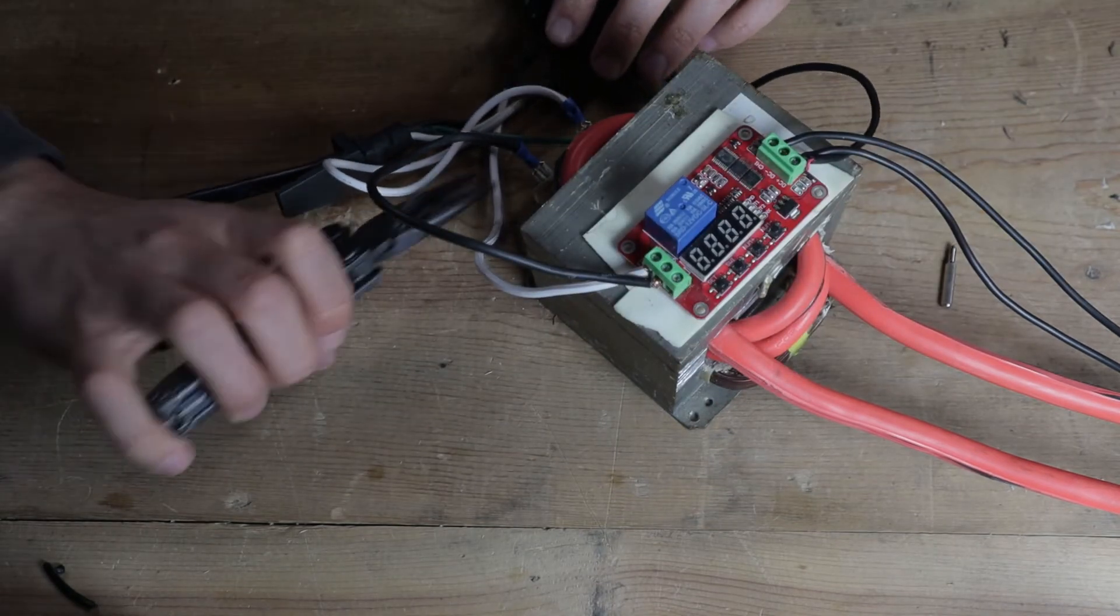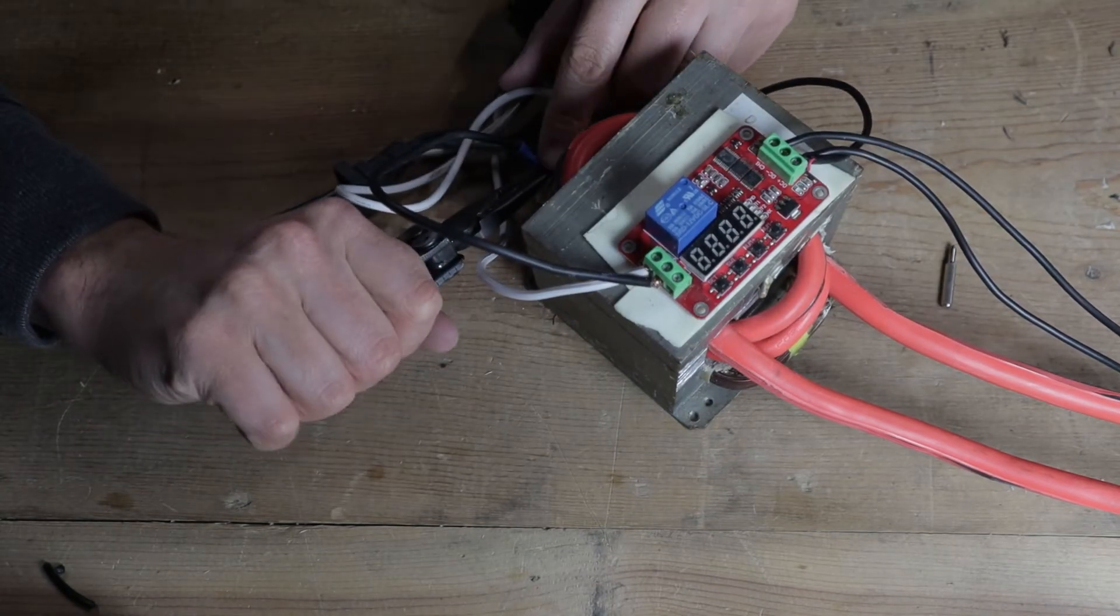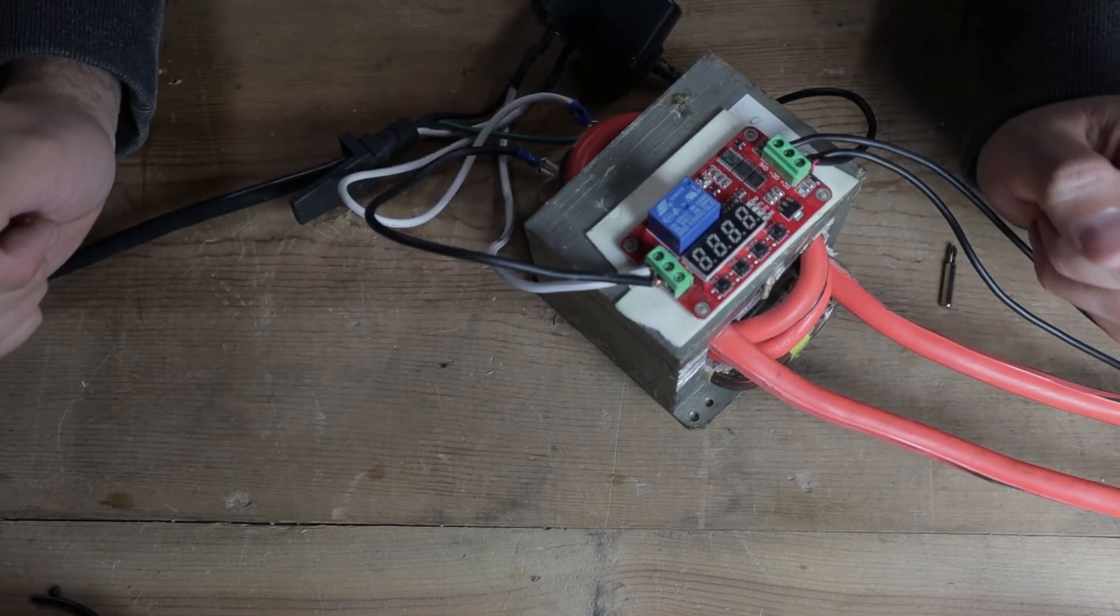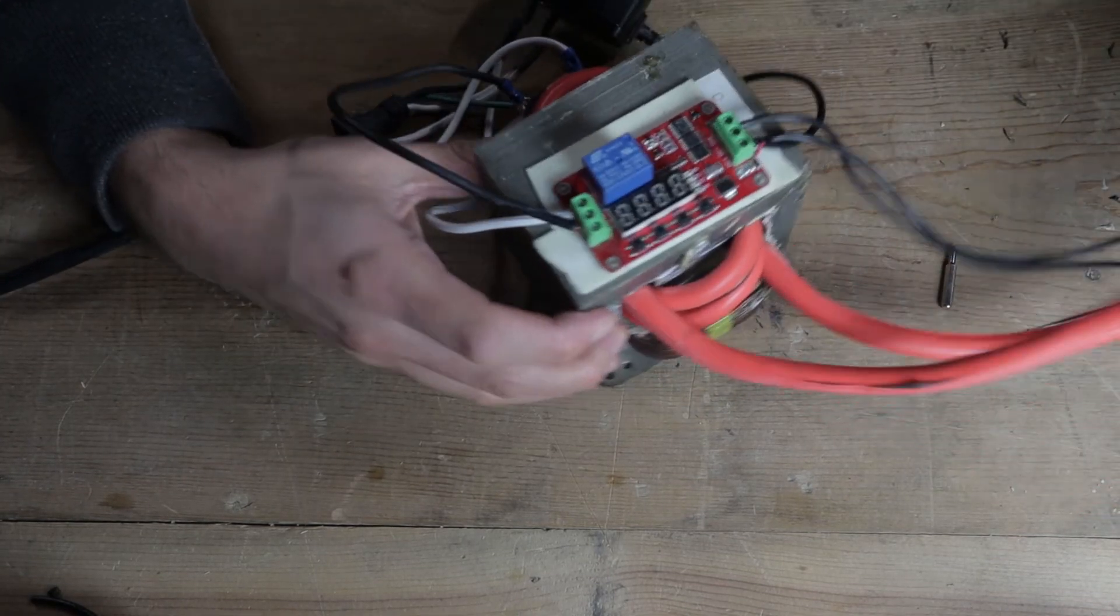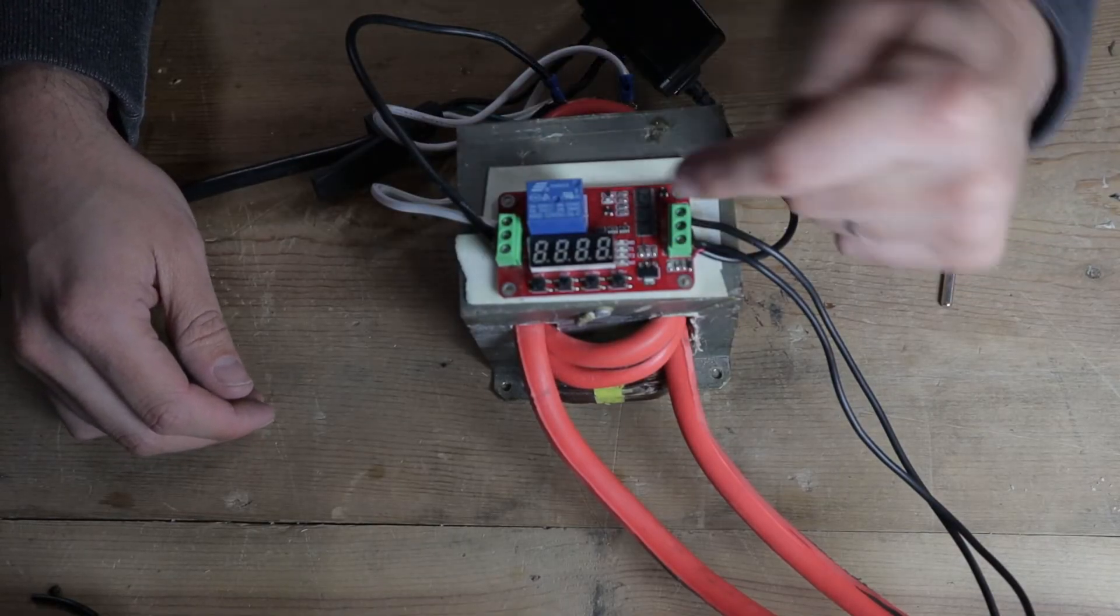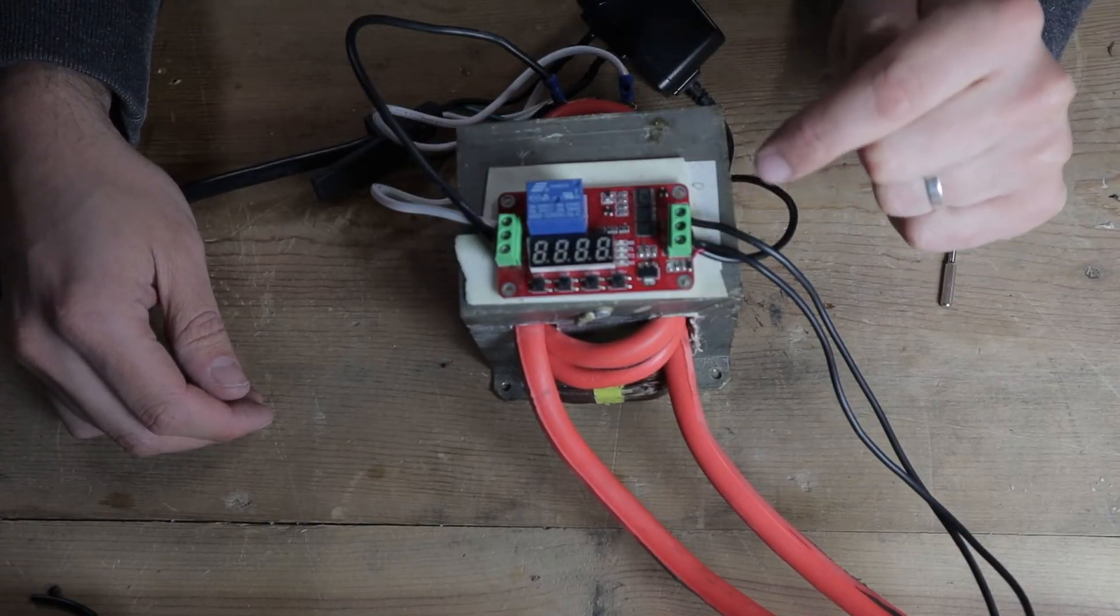And then the spade goes right onto the other spade connector of the transformer. I'm going to tighten these connectors on the transformer just so they're good and snug. But that's essentially it. So we have, again, on this end, we have DC power coming in to power the whole board and to operate the trigger mechanism.